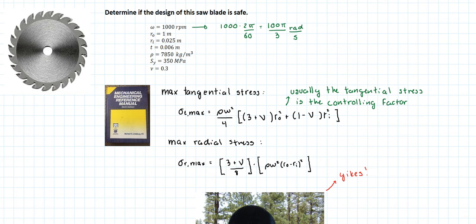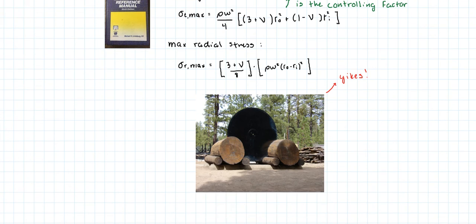The first thing that I did is that I converted RPMs to radians per second. So we have 100π over 3 radians per second. So let's plug in the numbers.